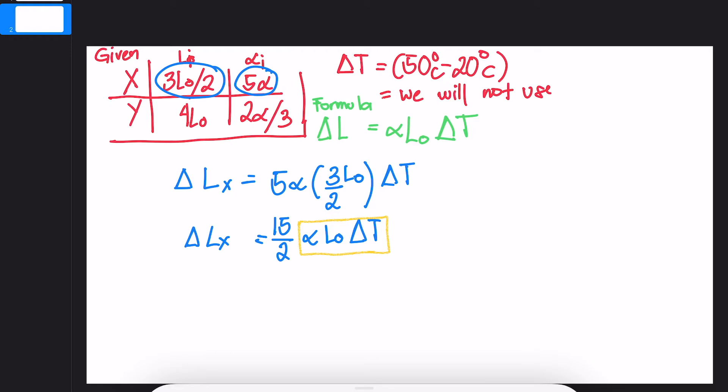Let's now solve for the thermal expansion for Y. We will use the values given. We'll simplify it—that will be 2 times 4 divided by 3, so that is 8 over 3, alpha L delta T. Again, let's highlight this part.